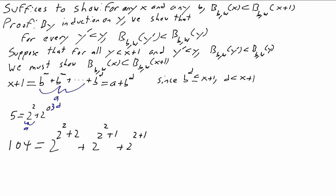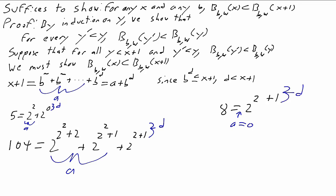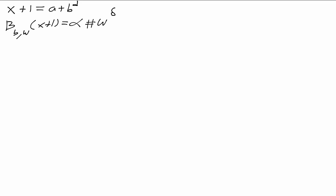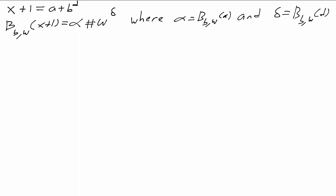When x + 1 is 104, in hereditary base 2, 104 = 2^(2^(2^1)) + ...; the first two terms are a, and 2^2 + 1 is d — the last exponent. a is allowed to be 0: if x + 1 is 8, then 8 = 2^(2+1), so a is 0 and d is 2 + 1. Then b_{b,omega}(x + 1) = alpha + omega^delta, where alpha = b_{b,omega}(a) and delta = b_{b,omega}(d). The hereditary base change function preserves the structure. If a happens to be 0, alpha also happens to be 0, and that's fine.